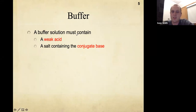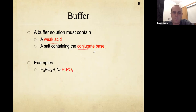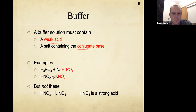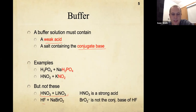A buffer solution contains a weak acid and its conjugate base. For example, you can have a buffer solution of phosphoric acid and sodium dihydrogen phosphate — a weak acid and the conjugate base salt of the weak acid. Another example would be nitrous acid and potassium nitrite. You can't use a strong acid; it needs to be a weak acid and its conjugate base. A combination like hydrochloric acid and bromide doesn't work because bromide is not the conjugate base of hydrochloric acid.